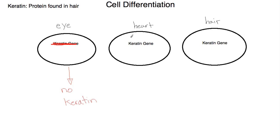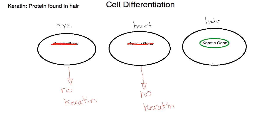The same goes for our heart cell. Even though our heart cell has the keratin gene, it will not be expressed, so this cell will not produce keratin. In our hair cell, on the other hand, the keratin gene will be expressed, and so this cell will produce keratin. This keratin protein will affect the function and structure of this cell.